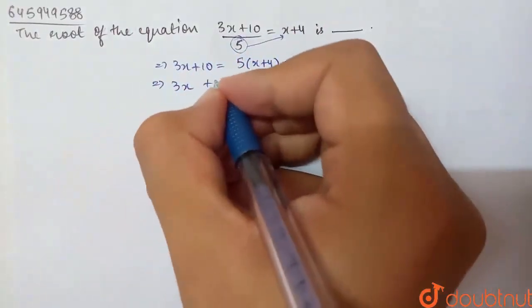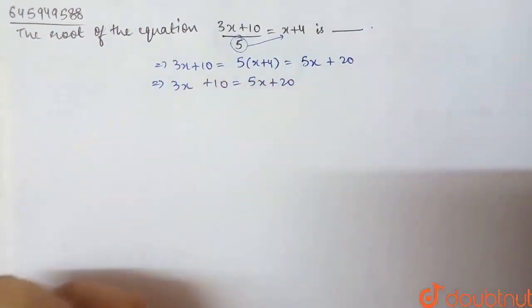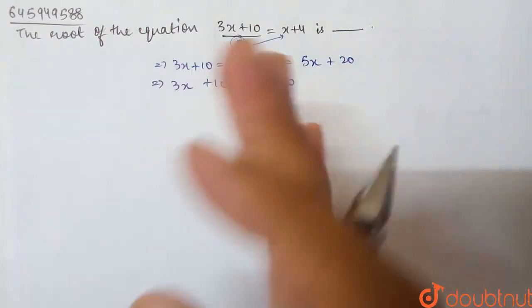So, 3x plus 10 is equal to 5x plus 20. Now, what do I know here? x terms are together and constant terms are together.